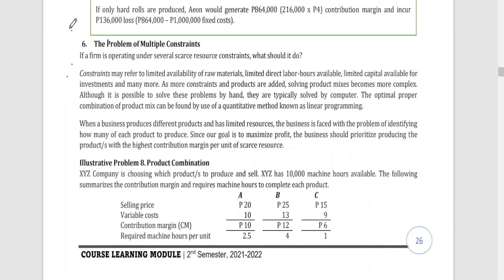In a real company, there is rarely only one type of constraint. It could be limited machine hours together with limited availability of raw materials, or limited direct labor hours, or limited capital. So if there are more constraints and more products are added, solving the product mix becomes complex, and it would be better to apply other methods such as linear programming.